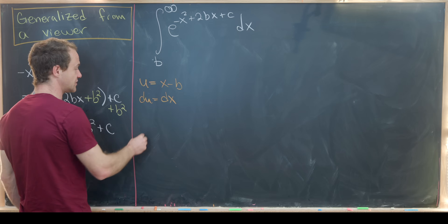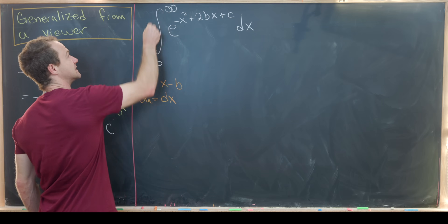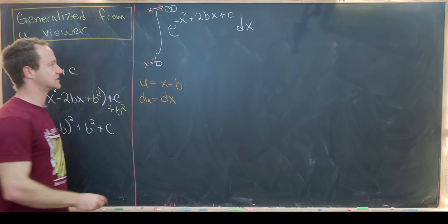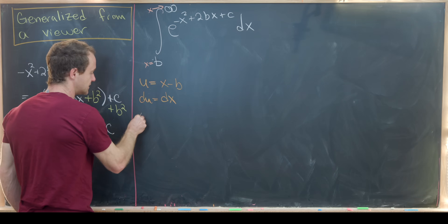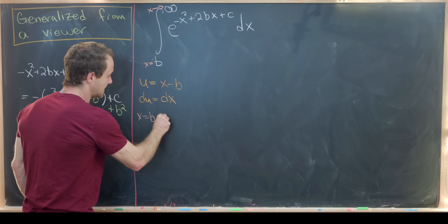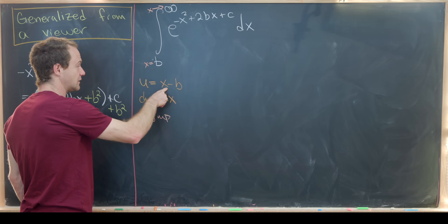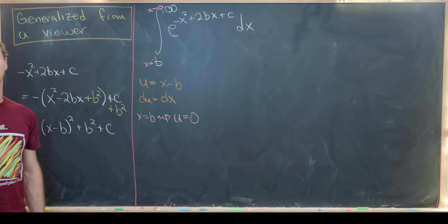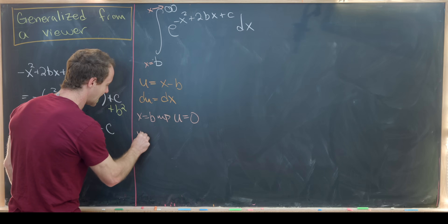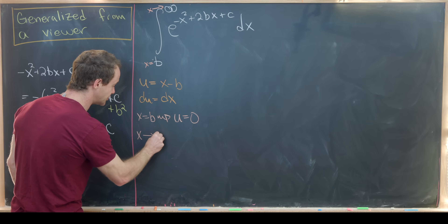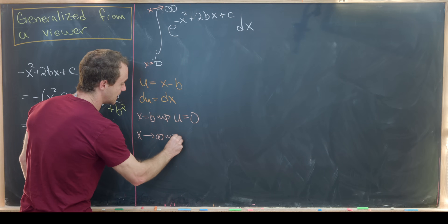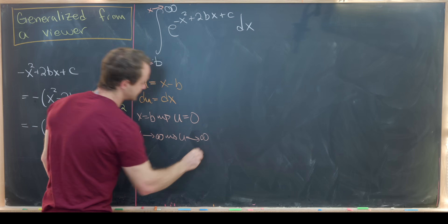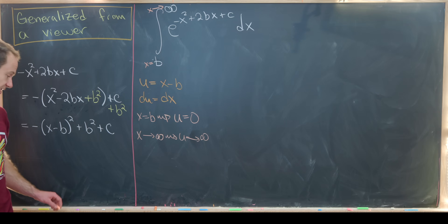What about the bounds of integration? These are x bounds, and we'll need to change them to u bounds. If x equals b, then u is equal to b minus b — in other words, u is equal to zero. And then as x approaches infinity, u will also approach infinity, so the upper bound will not change.